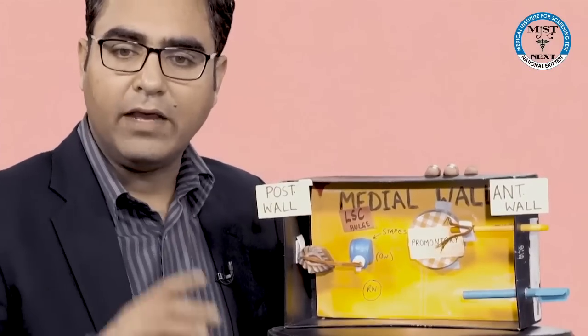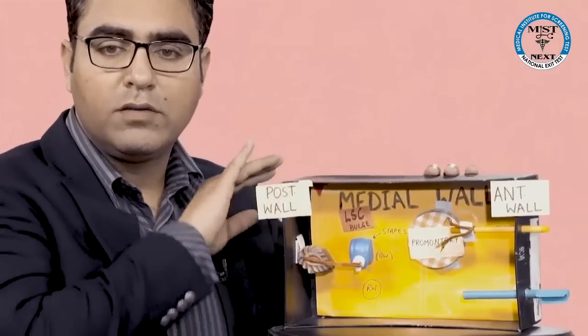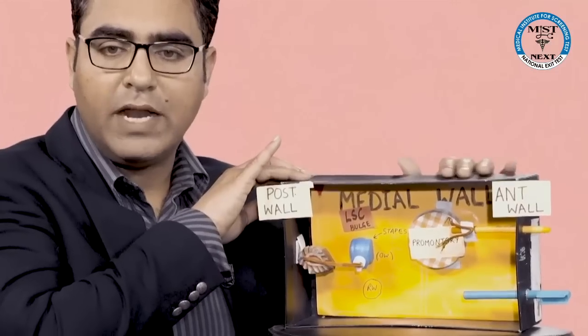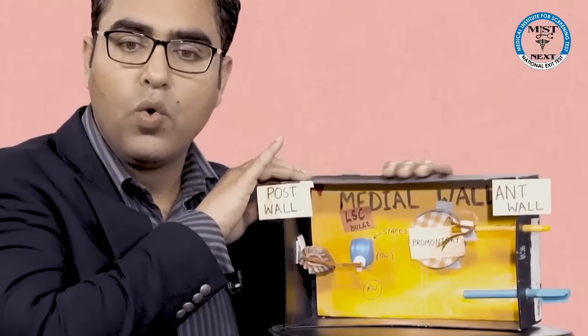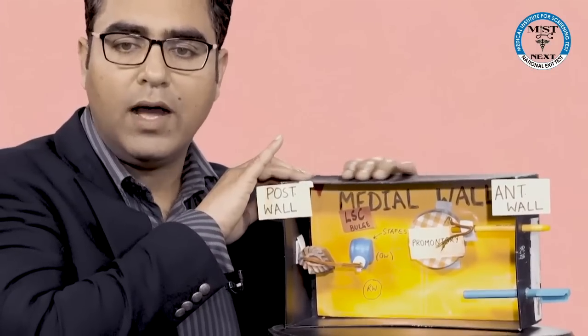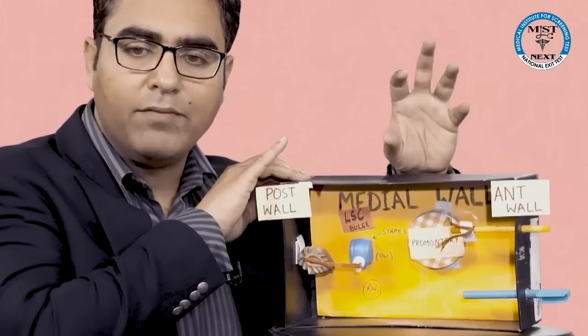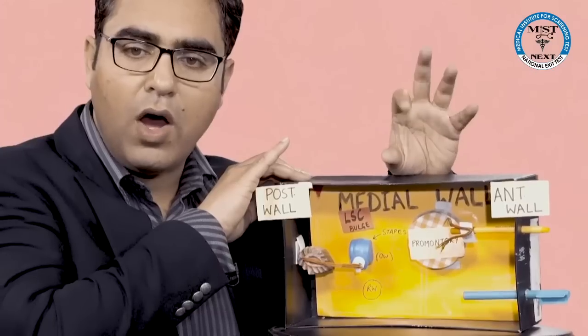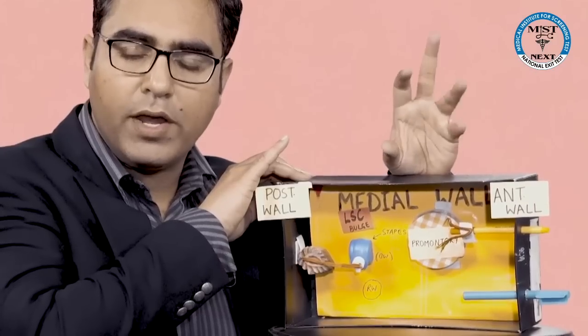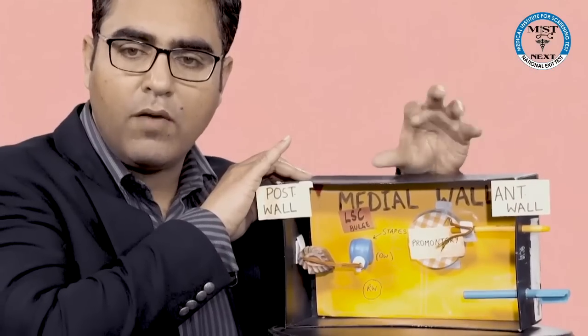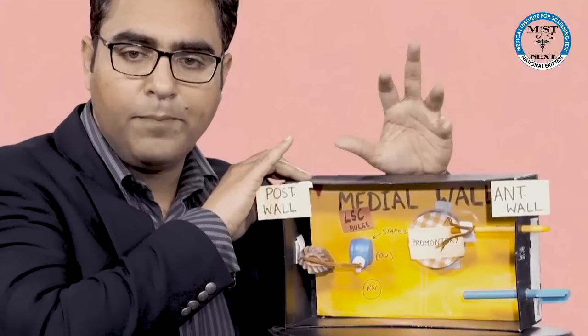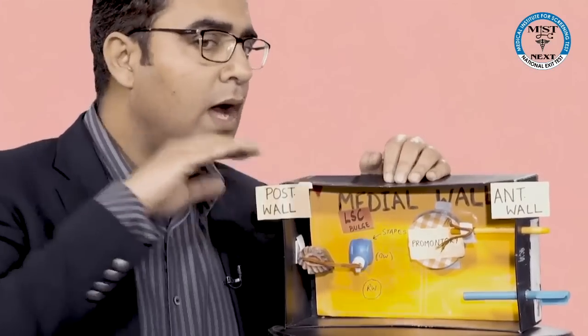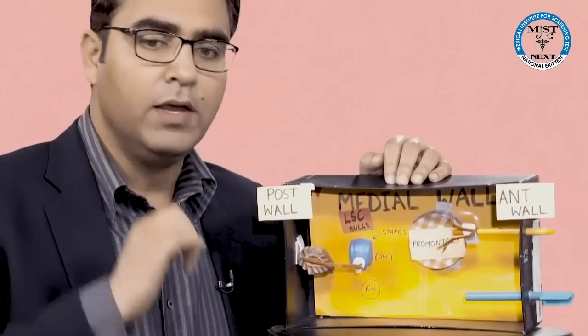Now please see the markings first. This black thing represents the roof of the middle ear. Above the roof of the middle ear lies the dura of the temporal lobe of the brain. So above the roof lies the dura of the temporal lobe of the brain.